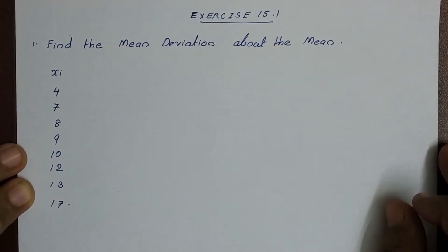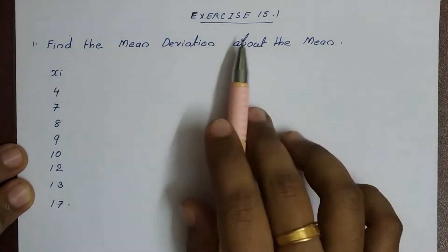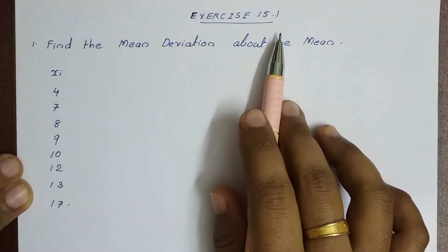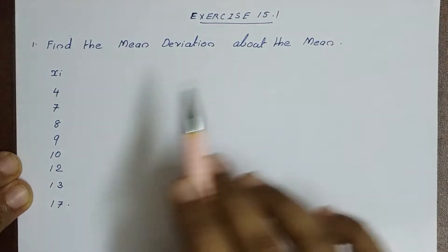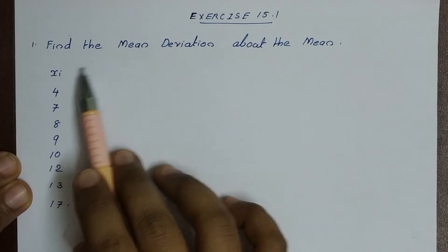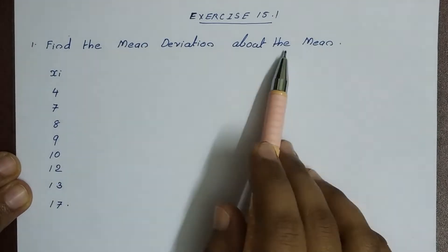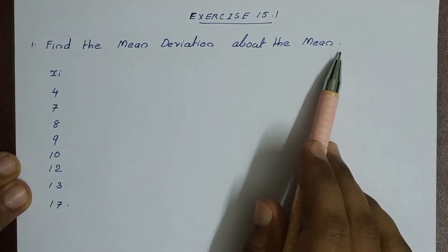Hi everyone, in this video we have problems with exercise 15.1. First question: find the mean deviation about the mean.